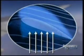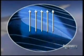Similarly, the curve of an airplane wing forces air on top of the wing to travel faster than air underneath it. Faster air means lower pressure, so the high pressure air moves towards the low pressure air and lifts the wing up.